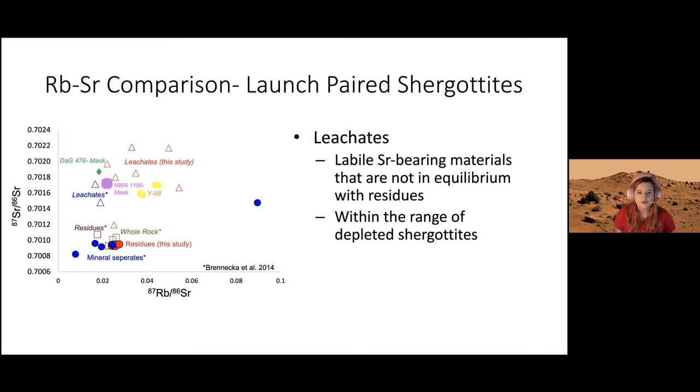We plotted data from some of those launch paired olivine-furic depleted shergotites, and they fall within that range. Whatever is in this leachate is showing us a Martian range.